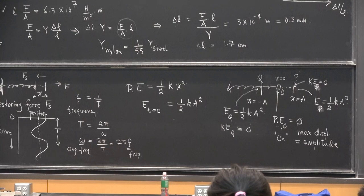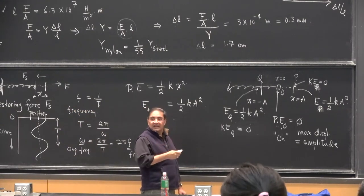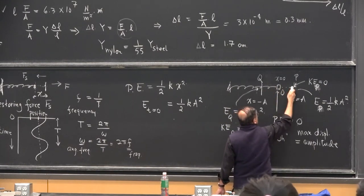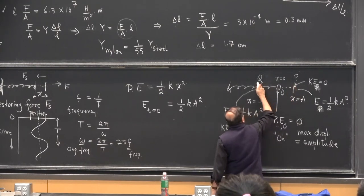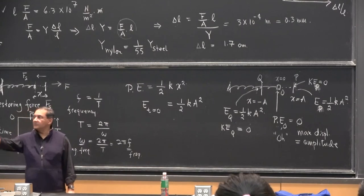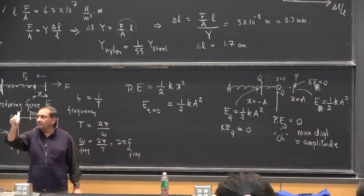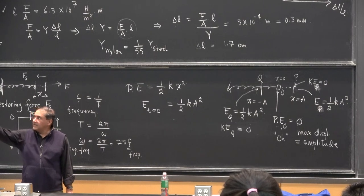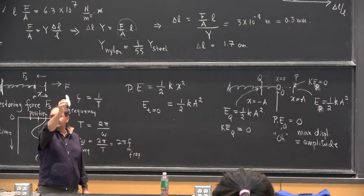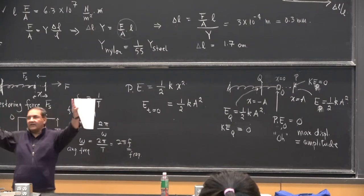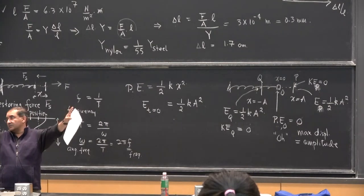The total energy is the same always because energy is not lost. At the extreme positions, energy is all potential. On the other hand, it's all kinetic smack in the middle. Think about a pendulum — it starts from one side, kinetic is 0, speeds up, slows down, turns around, speeds up, slows down. Smack in the middle, kinetic energy is maximized. At the edges, kinetic energy becomes 0, but energy is conserved, so potential energy takes over.